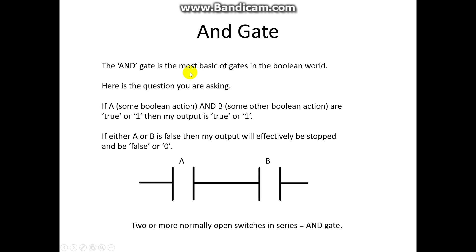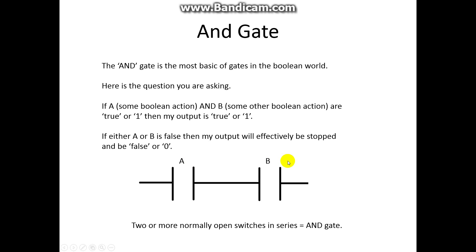So here's the AND gate. The AND gate is the most basic of the gates. The question you are asking is: is A AND B true? If they are both true, then your output over here becomes true. If either A or B is false, then no information can pass. That's why it's called an AND gate — A AND B must be true.